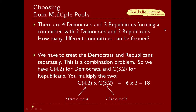Now we'll look at a problem called choosing from multiple pools. There are four Democrats and three Republicans forming a committee with two Democrats and two Republicans — how many different committees can be formed? We have two different pools: a Democrat pool and a Republican pool. We treat them separately. This is a combination problem because the order of selection doesn't matter. We compute C(4,2) for Democrats and C(3,2) for Republicans, then multiply the two to get the answer.